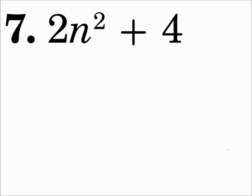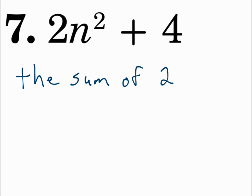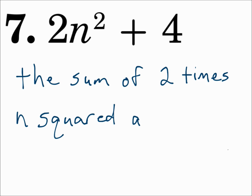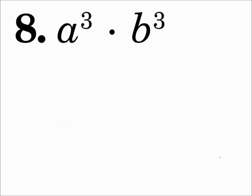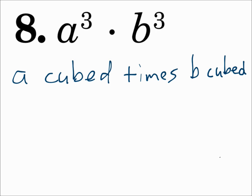Number seven: two n squared plus four. I have a sum of two things here. What am I adding together? I'm adding two n squared and four. So I could say 'the sum of two times n squared and four.' Number eight: a cubed times b cubed. I can write it just like that — 'a cubed times b cubed.'